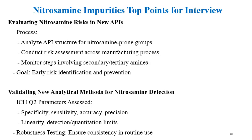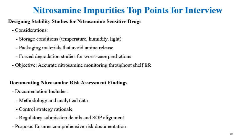For validating new analytical methods for nitrosamine detection, parameters assessed as per ICH Q2 include specificity, sensitivity, accuracy, and precision. Linearity, detection limits, and quantification limits must also be established. Robustness testing should be performed to ensure consistency in routine use.